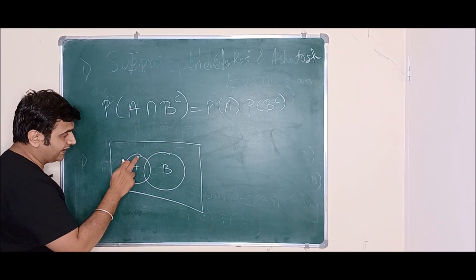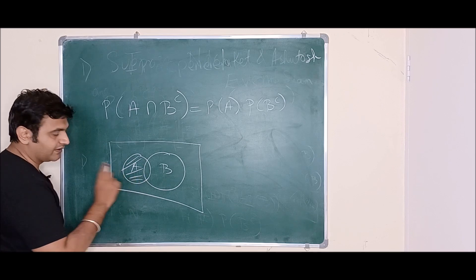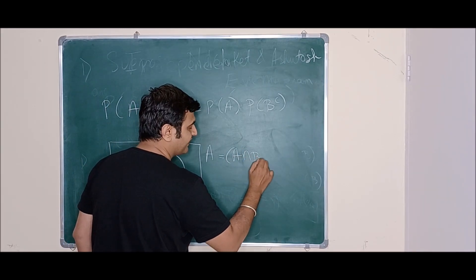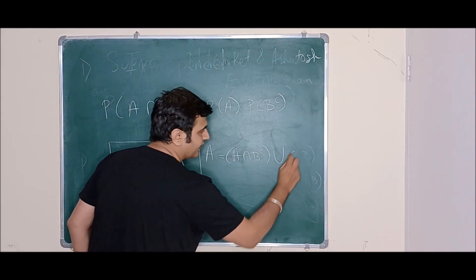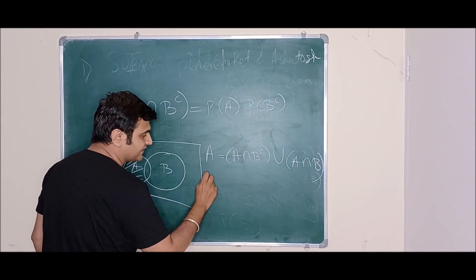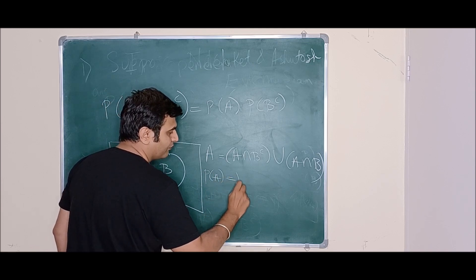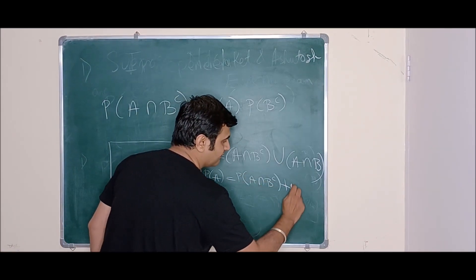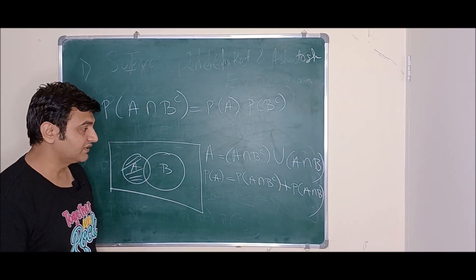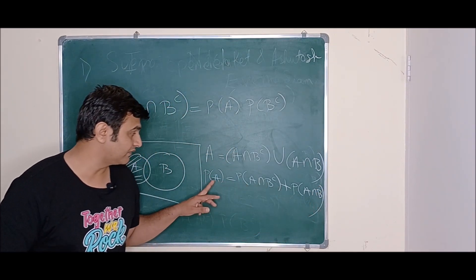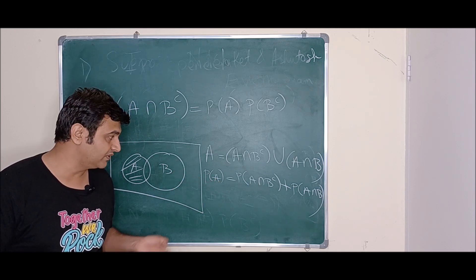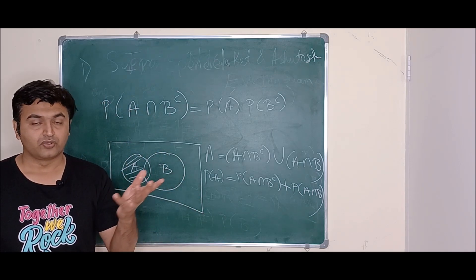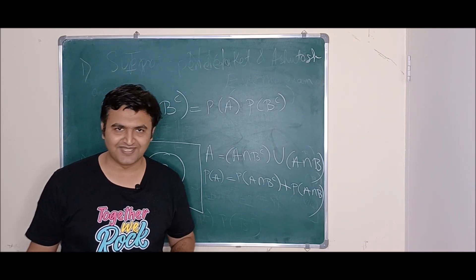Now for the hint used in the earlier example — proving that A and B complement are also independent, meaning P(A ∩ B complement) = P(A) · P(B complement). Using a Venn diagram, A can be written as (A ∩ B complement) ∪ (A ∩ B). These are disjoint, so P(A) = P(A ∩ B complement) + P(A ∩ B) = P(A ∩ B complement) + P(A)·P(B). Rearranging: P(A ∩ B complement) = P(A)(1 − P(B)) = P(A)·P(B complement). Try proving A complement ∩ B as homework.